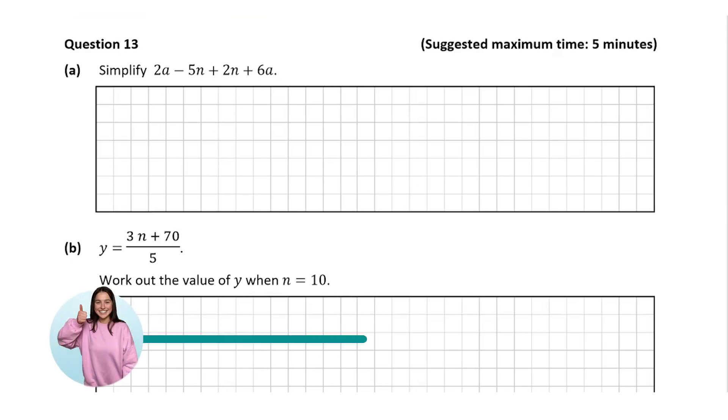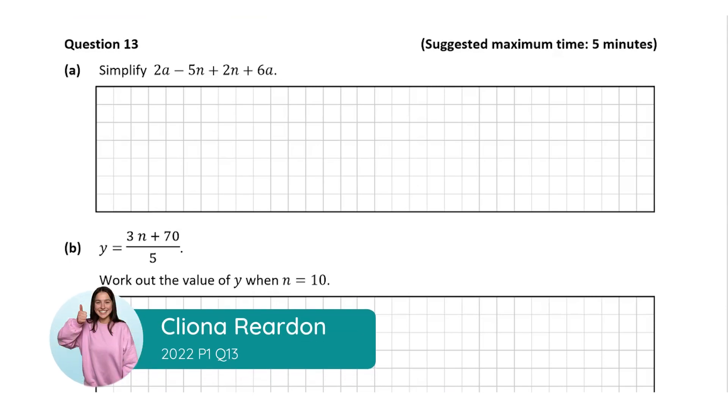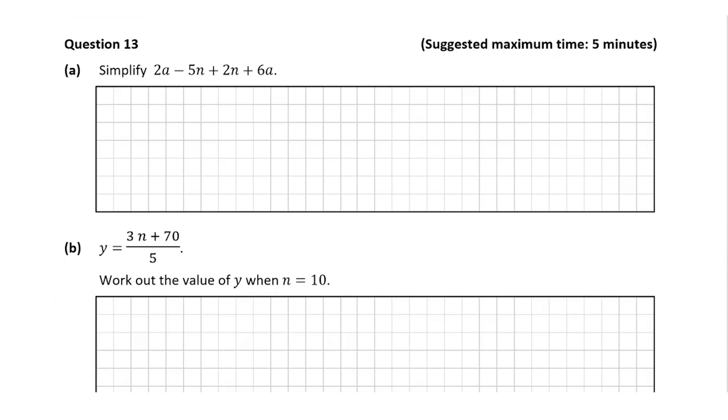Hello everyone and welcome to this video. Clina here and today I'm going to be taking you through the solution to question 13 from this junior cert ordinary level paper. So let's get started. In question A is a simplifying question and we're asked to simplify 2a minus 5n plus 2n plus 6a. Now you'll remember you can only add or subtract like terms.